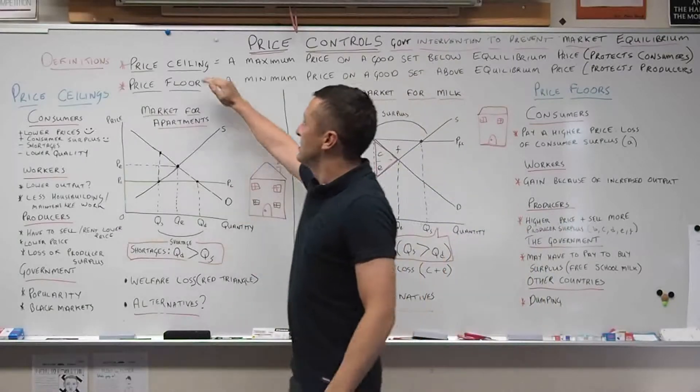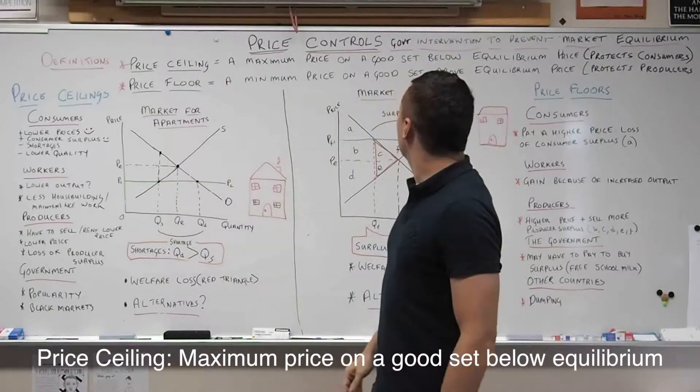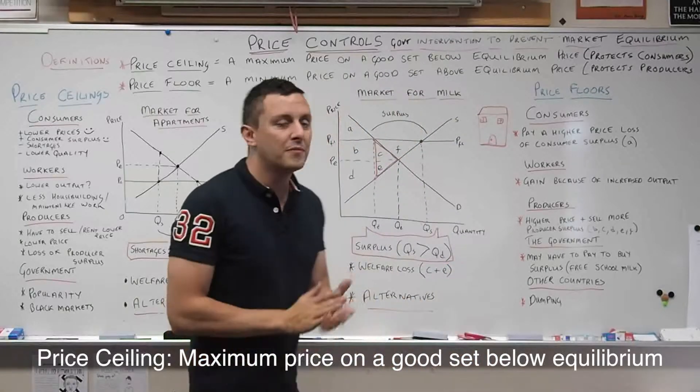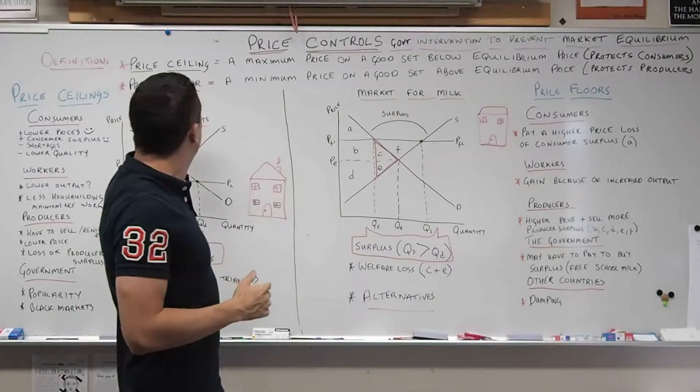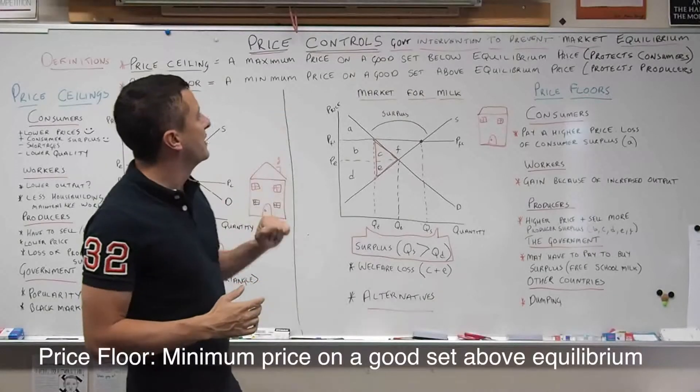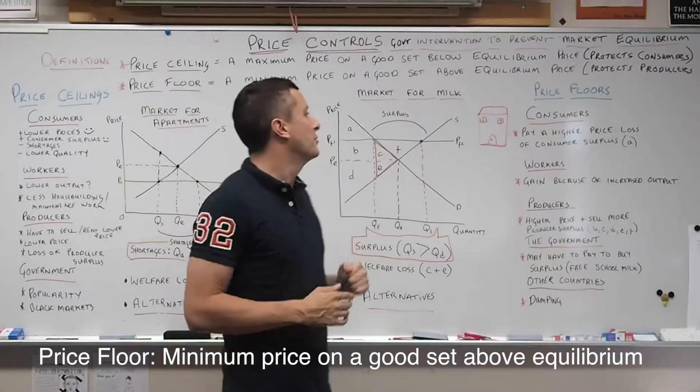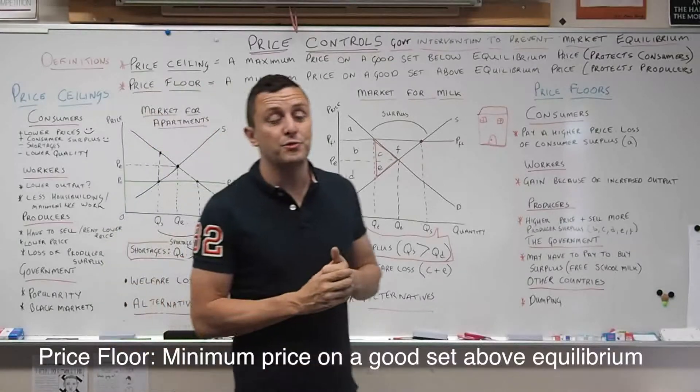Now price controls can be defined as government intervention to prevent the market reaching equilibrium. We're going to look at two forms. A price ceiling, which is a maximum price set below equilibrium to protect consumers, and a price floor, which is a minimum price set above equilibrium to protect producers.